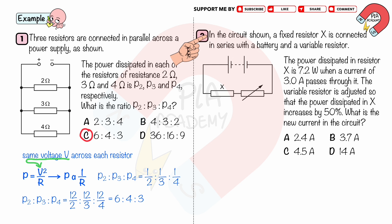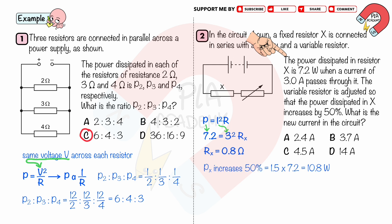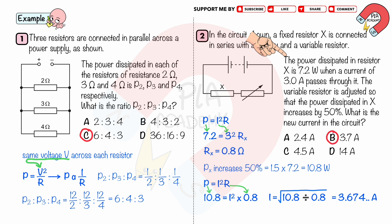In the circuit shown, a fixed resistor X is connected in series with a battery and a variable resistor. The power dissipated in resistor X is 7.2 watts when a current of 3.0 amperes passes through it. The variable resistor is adjusted so that the power dissipated in X increases by 50 percent. What is the new current in the circuit? From P equals I squared R, substituting P equals 7.2 W and I equals 3 A, we get Rx equals 0.8 ohms. The new power is 1.5 times 7.2 watts equals 10.8 watts. Substituting Px equals 10.8 W and Rx equals 0.8 ohms, the new current equals 3.7 amperes (to two significant figures).